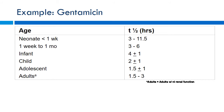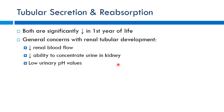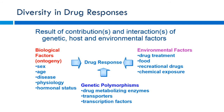Tubular secretion and reabsorption are both significantly decreased in the first year of life. Decreased renal blood flow and impaired ability to concentrate urine compound these issues. Lower urinary pH values also affect drug reabsorption, since pKa and solution pH determine whether a drug is protonated or unprotonated, affecting how readily it is reabsorbed across renal tubular membranes.